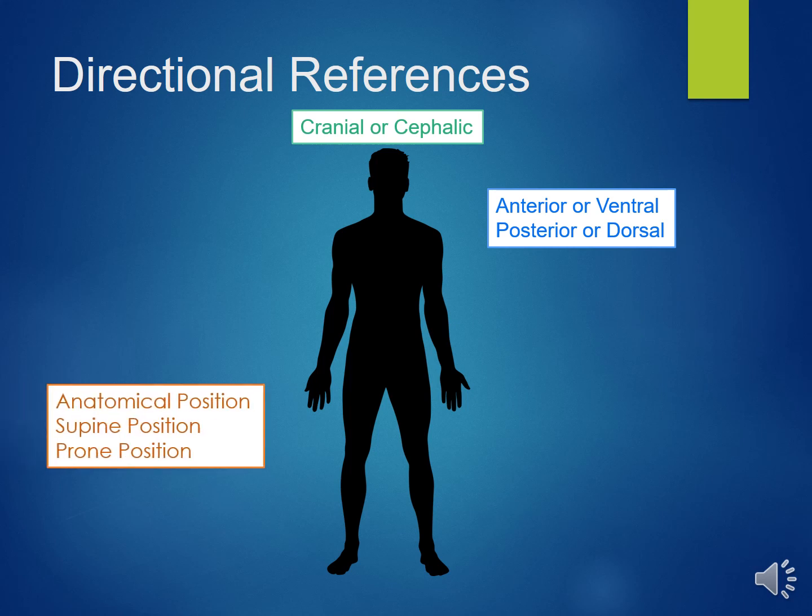Anatomical position is when the body is oriented upright with feet flat on the ground, face forward, arms at the side, and palms facing forward. Supine is the position of a person laying down face up. Prone is the position of a person laying face down.